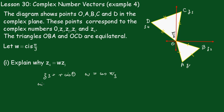So W times Z3 must be equal to R because we multiply the moduli together, and this will be the cis of θ plus π upon 3 because when we multiply two complex numbers together we add the arguments.